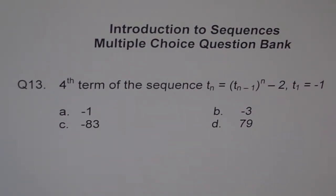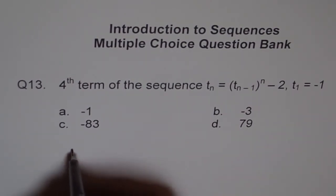We need to find the fourth term of the given sequence. The best way is to find all four terms and then we will know what the fourth term is. So t_1 is -1.